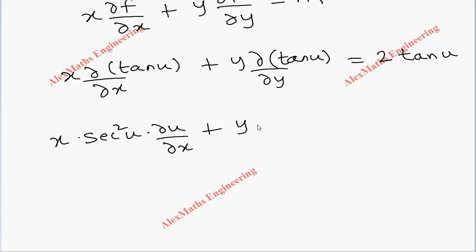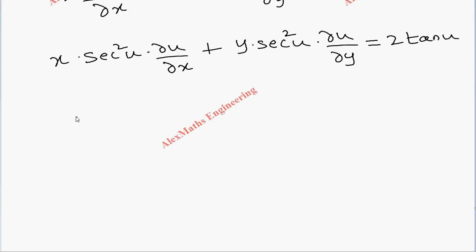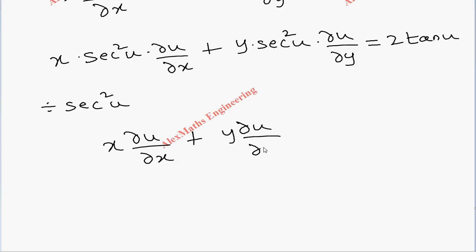In the same way, y into differentiation of tan u is secant square u, and differentiation of u with respect to y is ∂u/∂y by chain rule. On the other side it is 2 tan u as it is. Now every term we have to divide by secant square u, so we get x into ∂u/∂x plus y into ∂u/∂y equal to 2 tan u divided by secant square u.